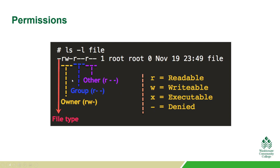The owner, the group, and the other all have the same three slots — they can all have read, write, or executable assigned to them. It depends on what the person setting the permissions allows. In this particular case, the owner has read and write, the group has read, and other has read only. If it's a dash, that means there are no permissions assigned to that category.